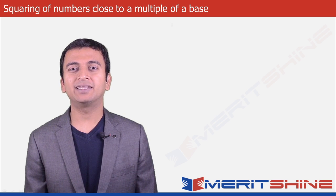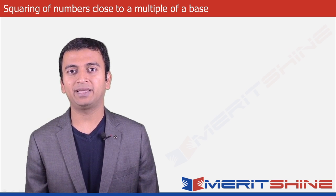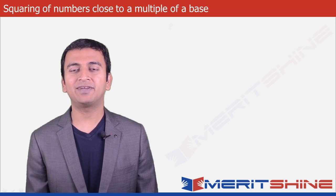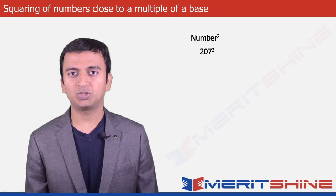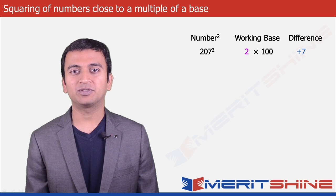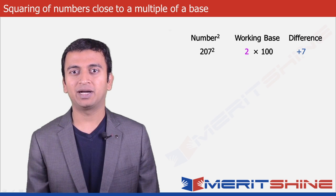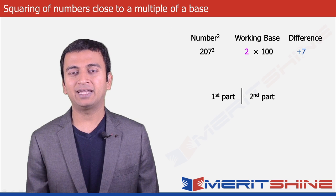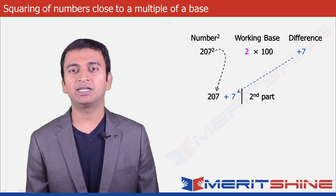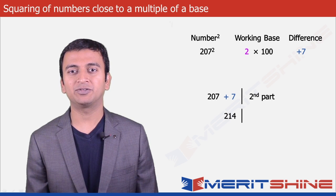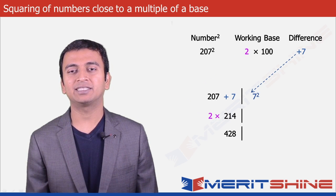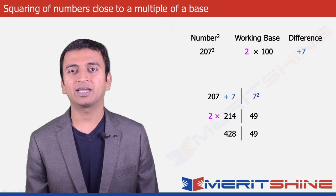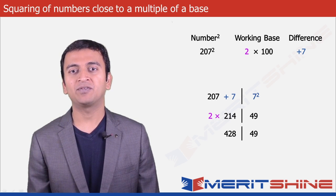Let us now try to find the squares of numbers which are close to multiples of the base. Let us begin by taking 207 as an example. Here our working base would be 2 into 200 with multiplier as 2 and the difference would be plus 7. The first part would be the number added to the difference, which gives us 207 plus 7 equals 214. Since our multiplier is 2 we will have to multiply 214 with 2 to get 428, and the second part would be 7 squared giving us 49. So we can club these two and get our final answer as 42849.